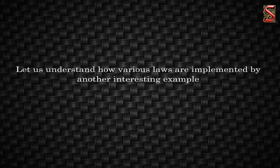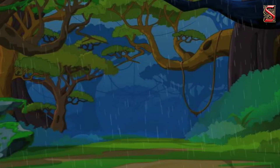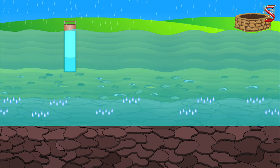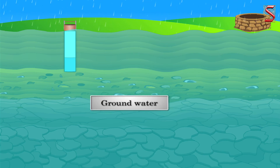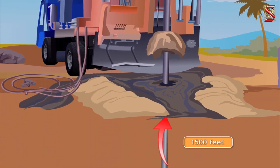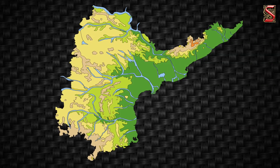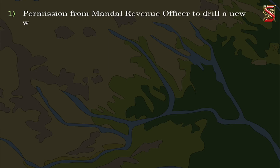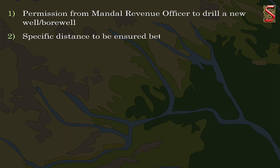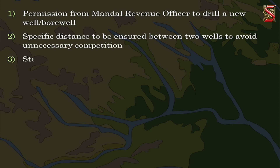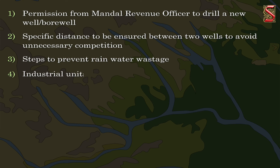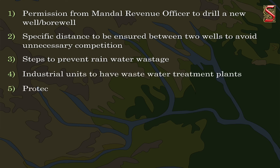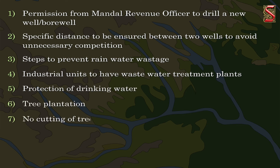Let us understand how various laws are implemented with another interesting example. All of us are aware of the importance of saving ground water; it is very important for us to preserve it. But still today, people dig bore wells up to the depth of 1,500 feet or more, which is unauthorized. To prevent this, the Andhra Pradesh Water, Land and Trees Protection Act was passed in 2002. Its main features were: permission from the Mandal Revenue Officer to drill a new well or bore well; specific distance to be ensured between two wells to avoid unnecessary competition; steps to prevent rainwater wastage; industrial units to have wastewater treatment plants; protection of drinking water; tree plantation; and no cutting of trees without permission.